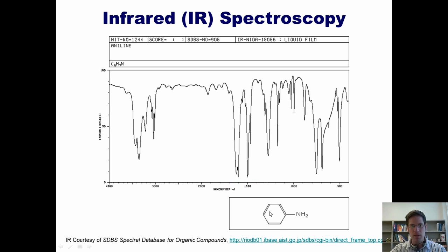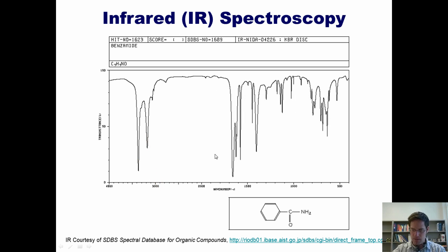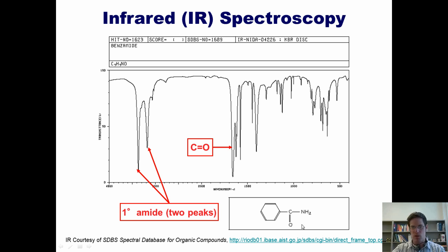Here's an IR of an amine-containing compound, aniline. Because it's a primary amine with two hydrogens bonded to the nitrogen, it gives two peaks in this region. An NH stretch appears around the same place as an OH because an NH bond and an OH bond are chemically and physically similar. Here's an IR of a primary amide, benzamide. Like its primary amine counterpart, it gives two peaks in the NH stretch region, plus the obvious presence of the carbonyl. It's easy to remember that primary amines and amides have two peaks because there are two hydrogens on the nitrogen.